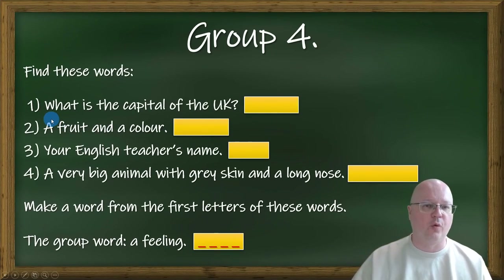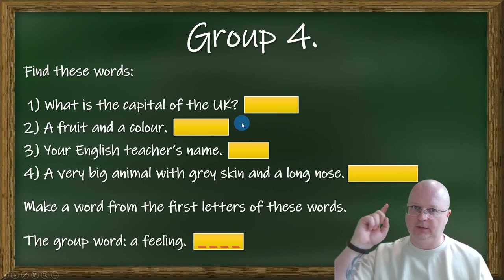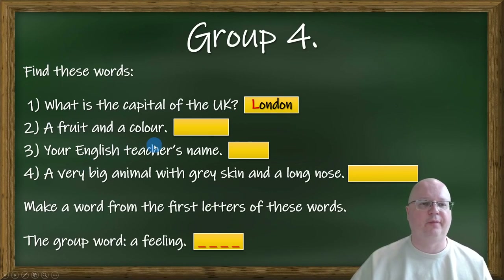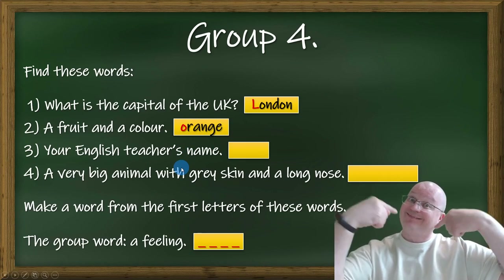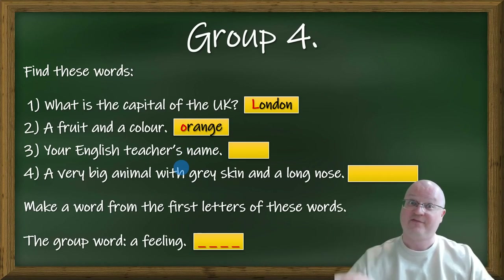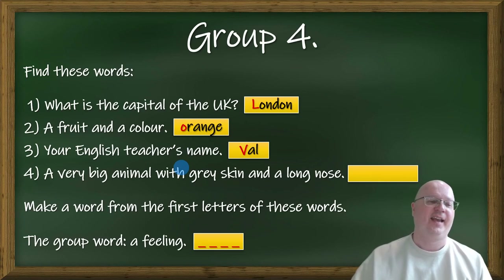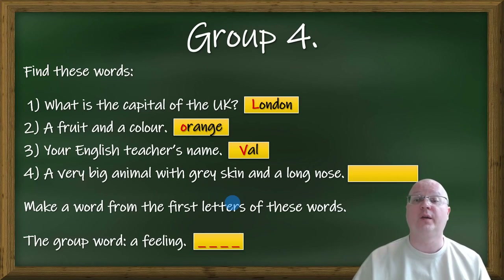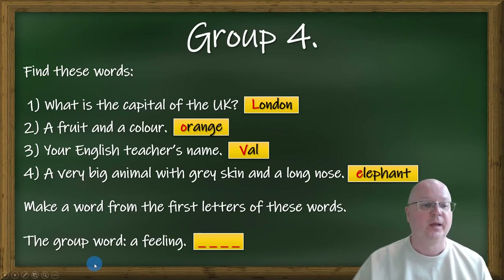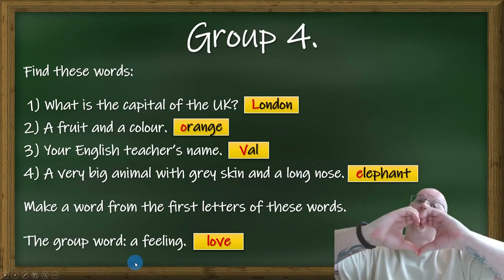Group number four: what is the capital of the UK? London. A fruit and a color — orange. Your English teacher's name — Val. And a very big animal with gray skin and a long nose is, of course, an elephant. The group word is love.